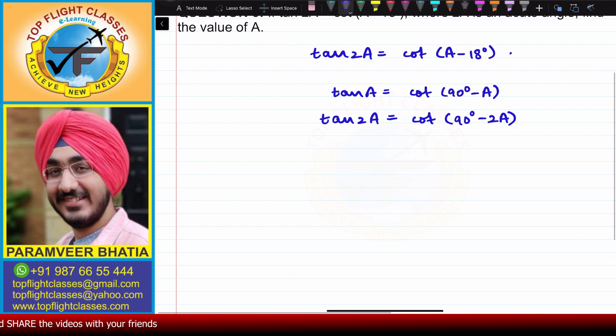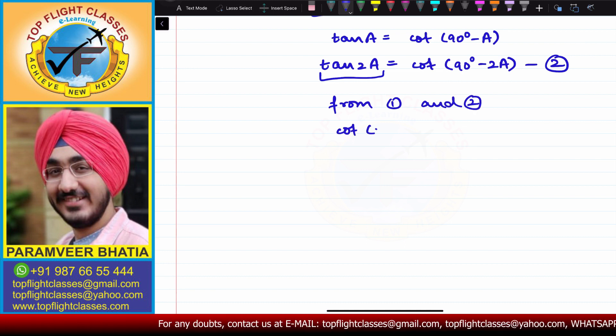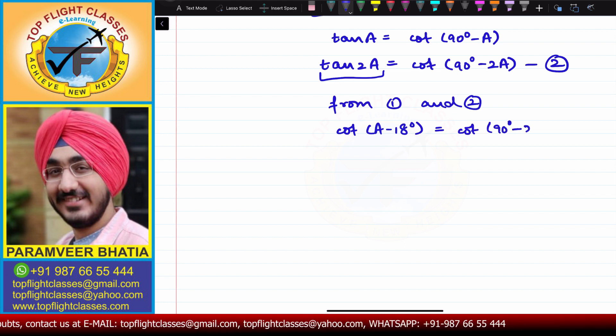Let this be my first equation and this be my second equation. In the first and second equation, the left-hand side is the same, that is tan 2A. So from equations 1 and 2, I will get cot (A - 18°) equals cot (90° - 2A).